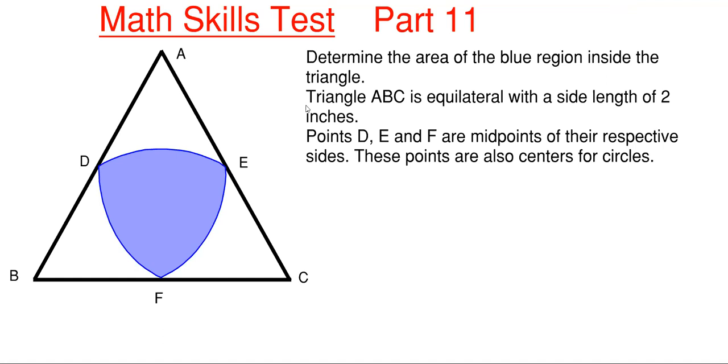So what we have going on here is that we have to determine the area of the blue region inside of this triangle, and we are told that the outside triangle ABC is an equilateral triangle with side length of 2 inches. So every side here is 2 inches, and points D, E, and F are the midpoints of their respective sides and these points are also centers for circles. As you can see we have a little bit of an arc going on here.